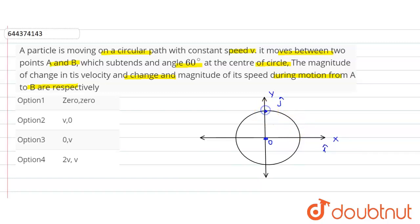Let's assume here is point A, and the velocity at A will be in this direction. Let's assume here is point B, and the angle subtended is 60 degrees. So in the first part, we have to find the change in velocity as it moves between two points A and B with constant velocity v.